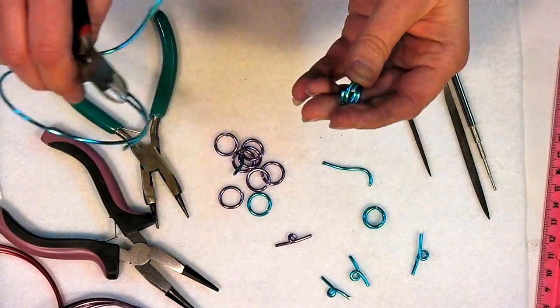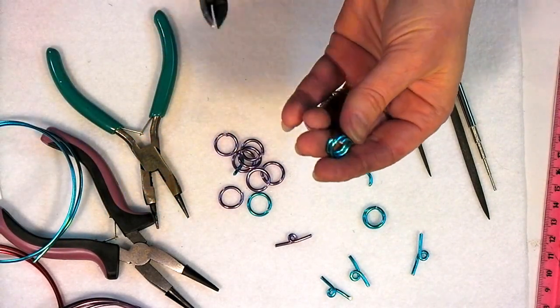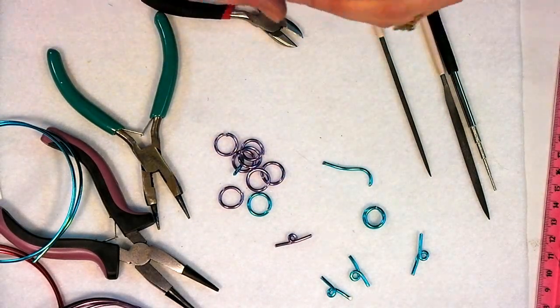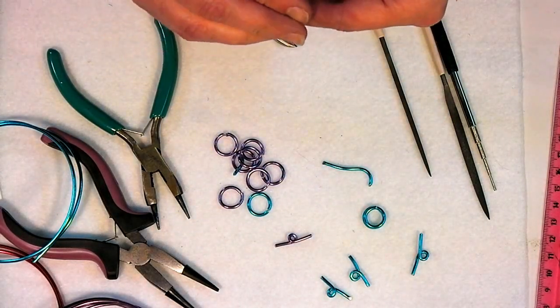Now if I want to make a jump ring instead, I could just cut straight through and I'd have two jump rings right there. That's the only difference, the split ring has an extra loop. Just file that away in the old brain attic and you'll know what to do next time.